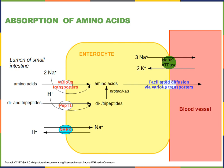Some amino acids are absorbed as short peptides — dipeptides and tripeptides are just two or three amino acids long. A secondary active transport mechanism uses a concentration gradient of hydrogen ions to drive the transport of these short peptides across the apical surface of the enterocyte.